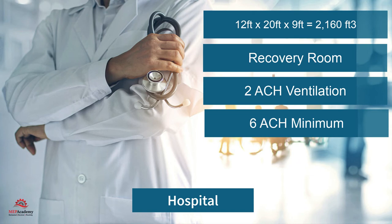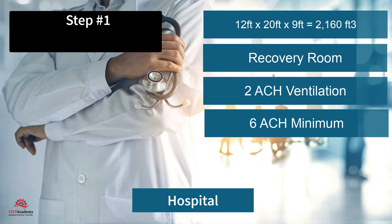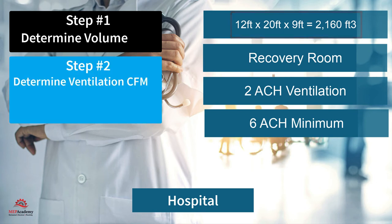Step 1 is to determine the volume of the room, which is 2,160 cubic feet. Step 2: determine the required ventilation CFM. CFM equals two air changes per hour times 2,160 cubic feet divided by 60, giving CFM equals 72.